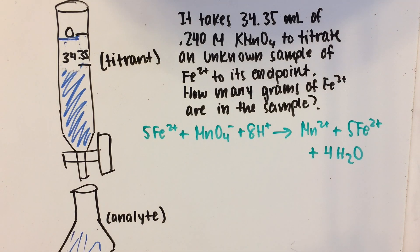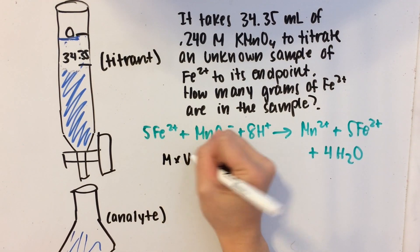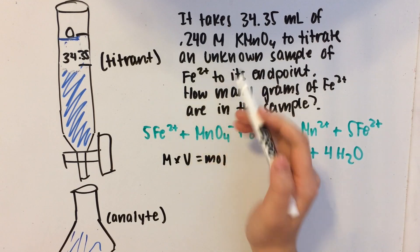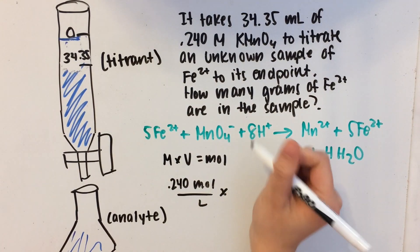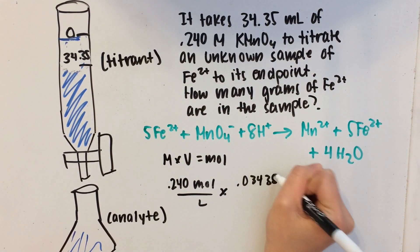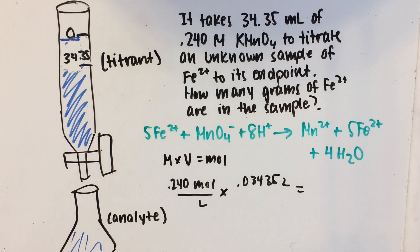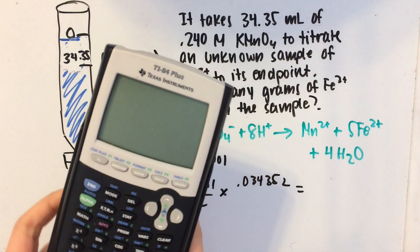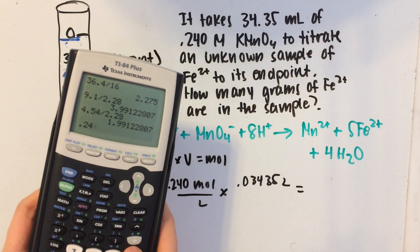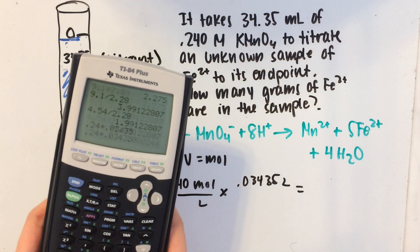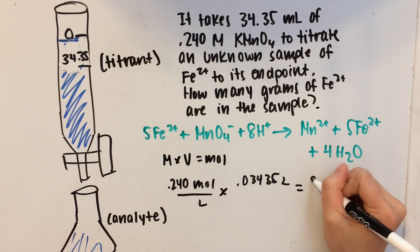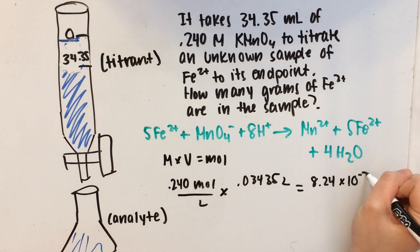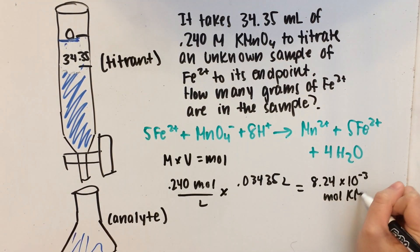Now we need to find how many grams of Fe2+ are in the sample. First, let's use the handy formula: M times V equals moles. So molarity, which is 0.240, times volume, which is 0.03435 liters, will give us the moles of KMnO4. That calculation gives us about 8.24 times 10 to the negative 3 moles of KMnO4.